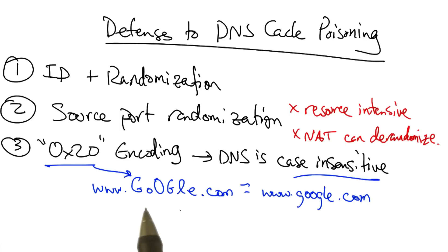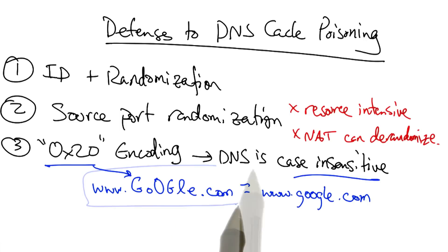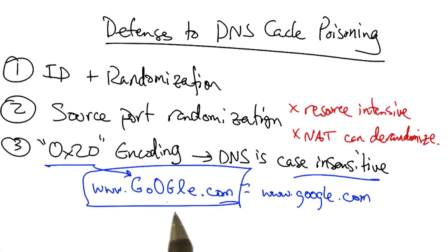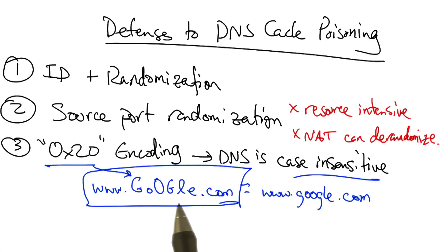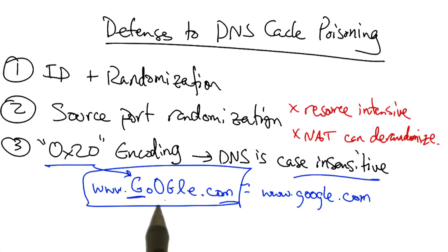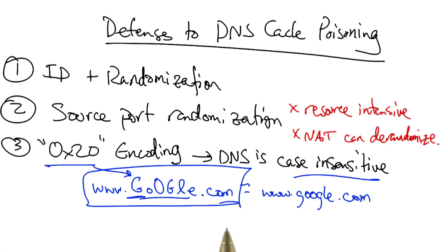When generating a response to a query, such as this one, the query is copied from the DNS query into the response exactly as it was in the query. The mixed pattern of upper and lowercase letters thus constitutes a channel. If the resolver and the authoritative server can agree on a shared key, then they are the only ones who know the appropriate pattern of upper and lowercase letters for a particular domain name.